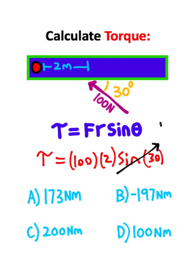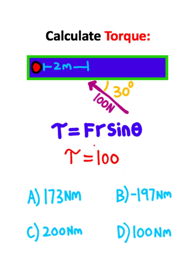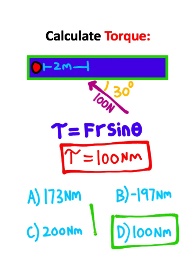Now the sine of 30 is equal to 1 half. And this 1 half and this 2 are going to cancel each other, so we'll only be left with 100. So the magnitude of our torque is going to be 100 newton meters, and if we assume counterclockwise to be positive, 100 newton meters is going to be the solution to the problem. So if you answered with option D, you would be correct.